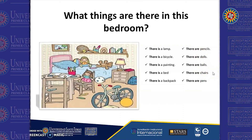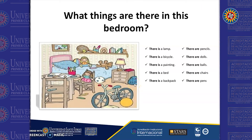Singular: there is a lamp, there is a bicycle, there is a painting, there is a bed, there is a backpack. Singular forms. Remember to use the article "a" before the noun—a lamp, a bicycle.